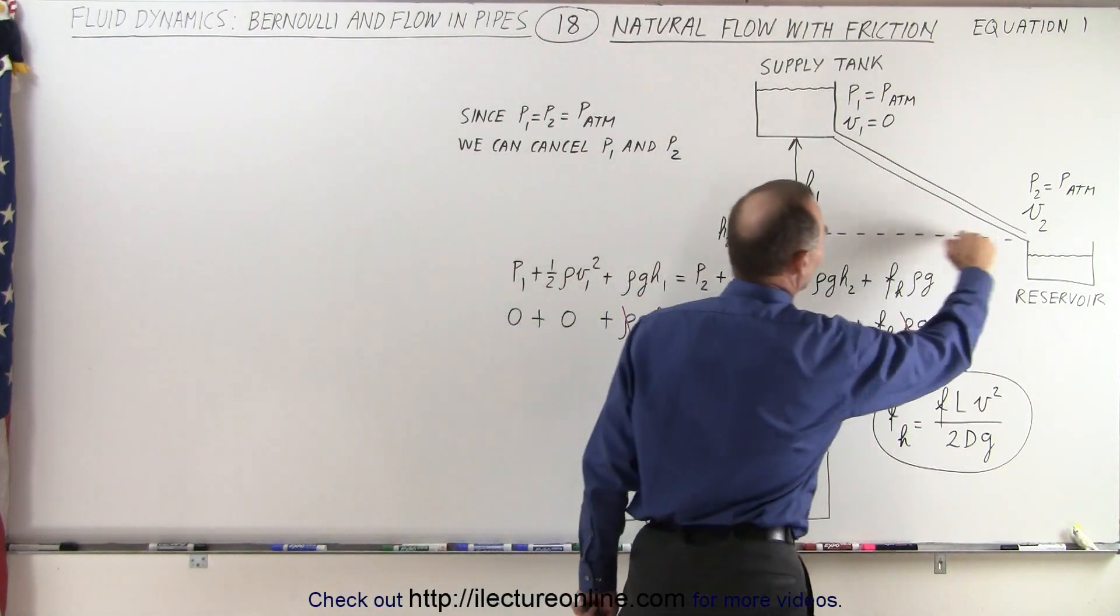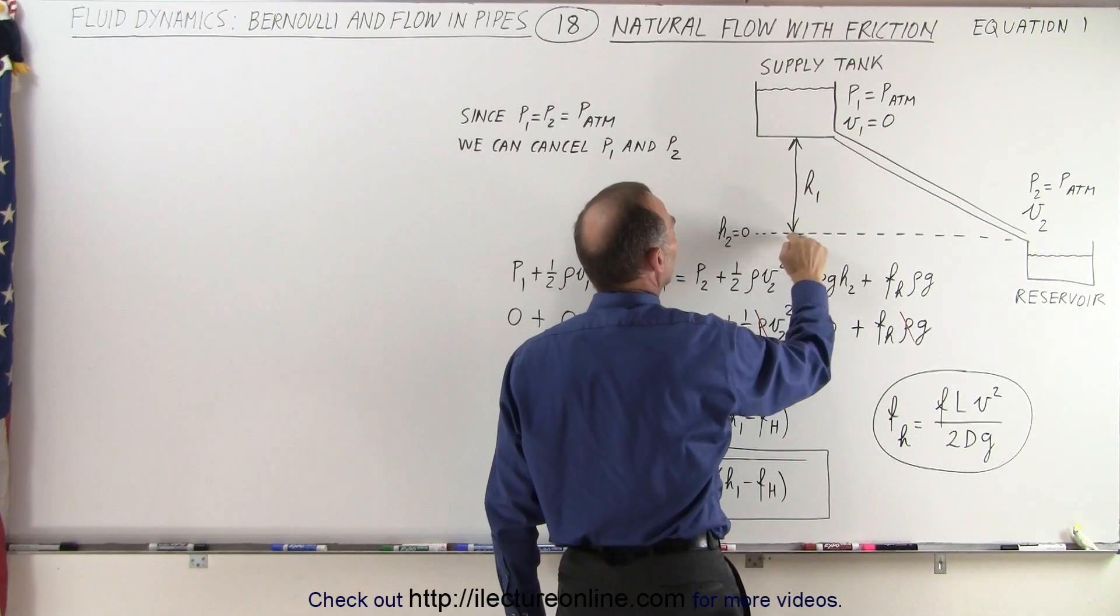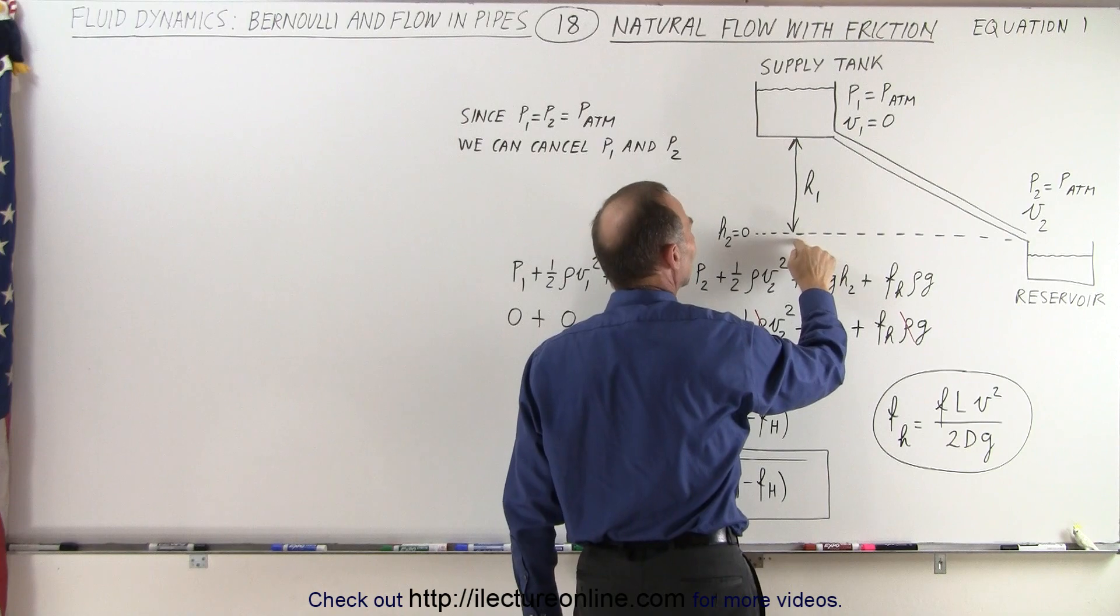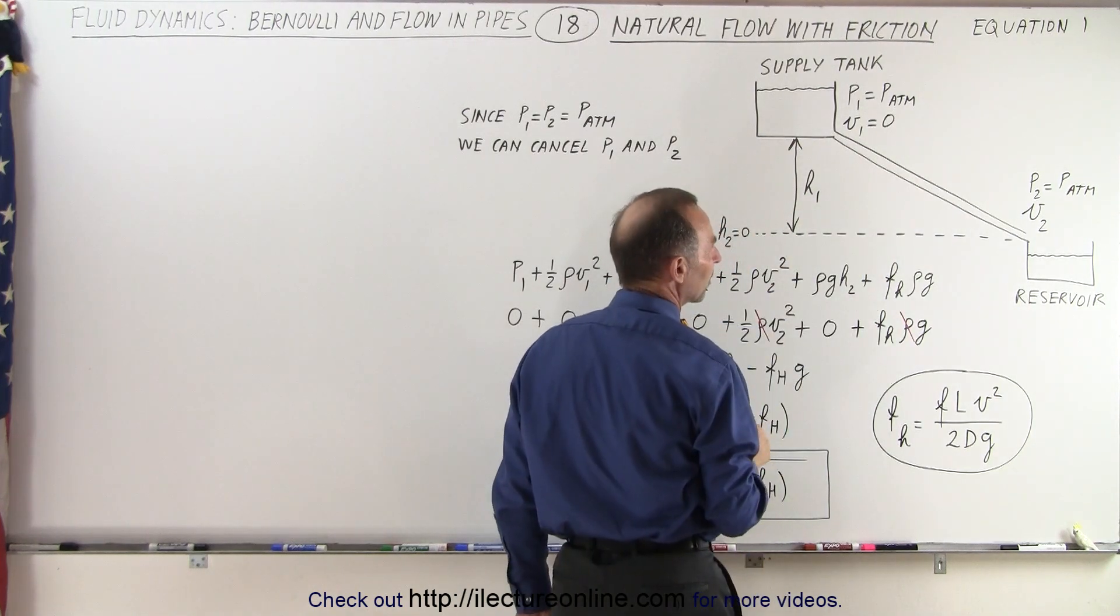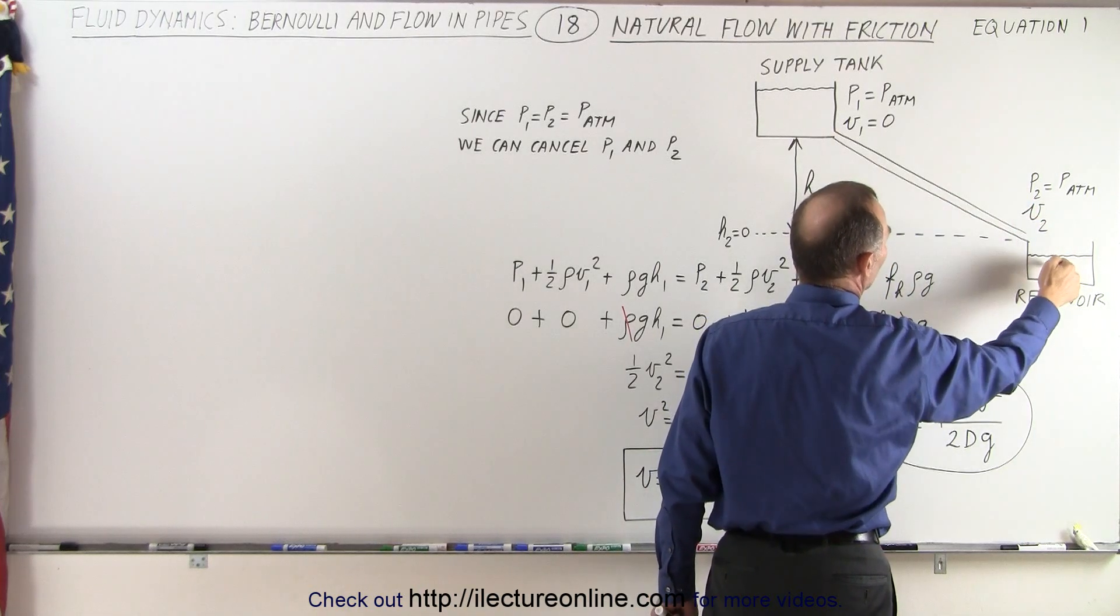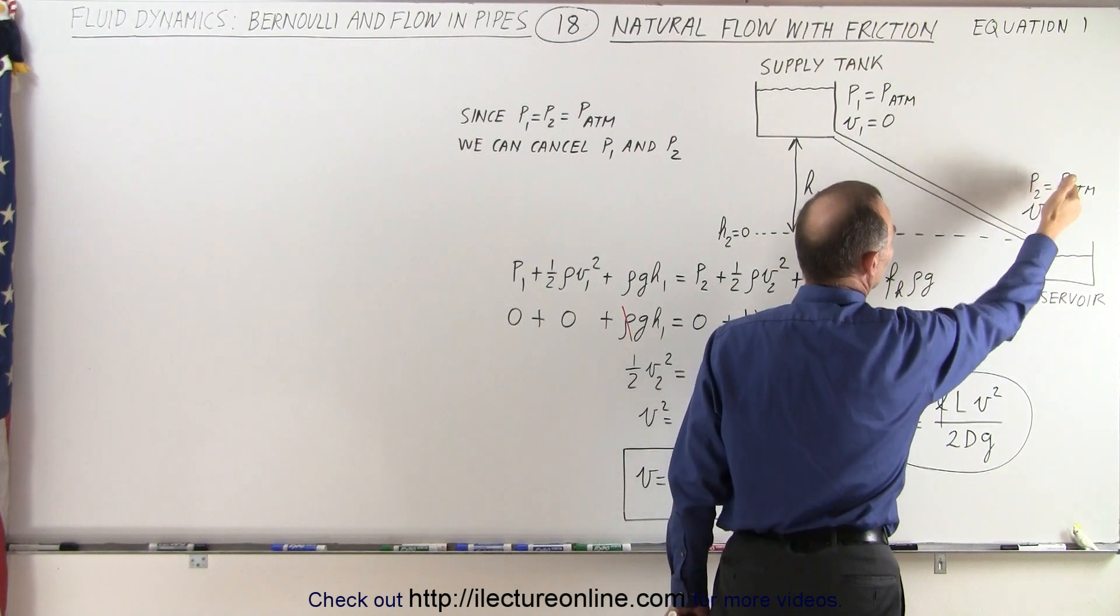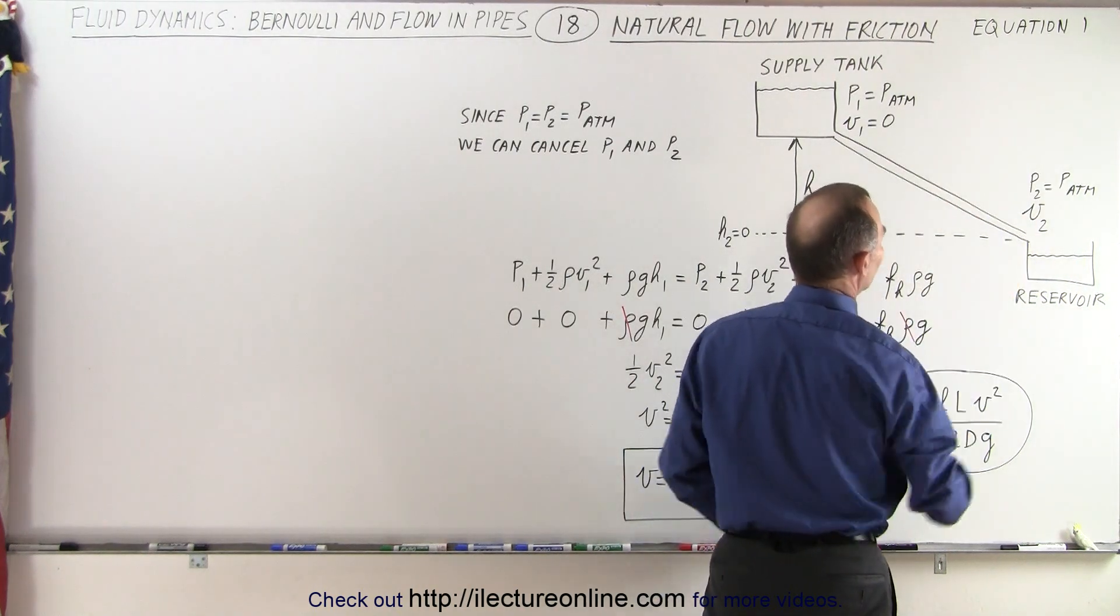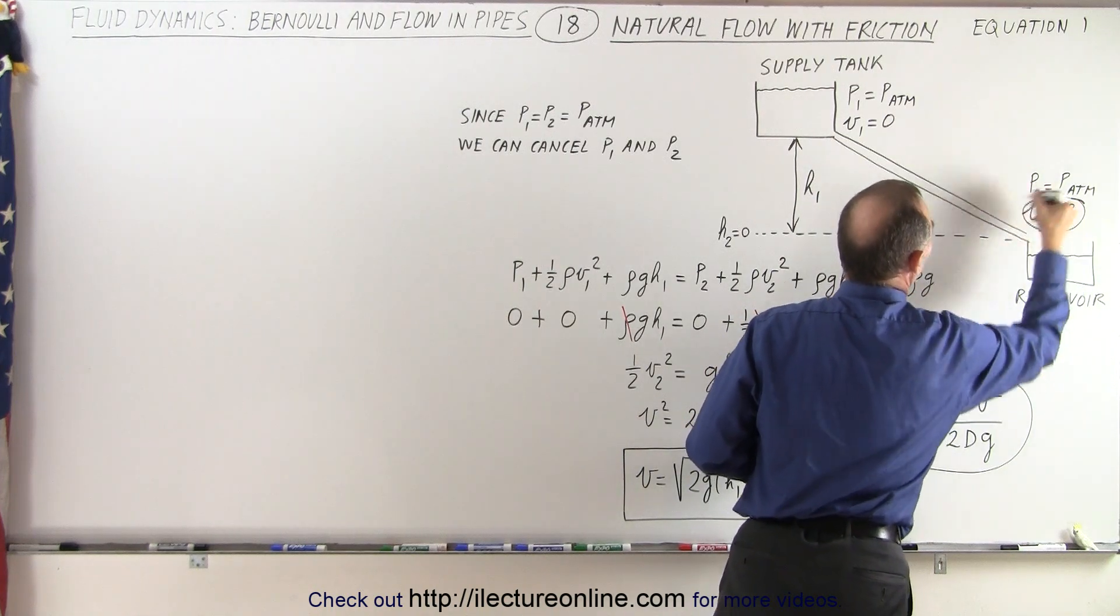Let's assume that the height reference is at the bottom of the pipe here, so that h2 is zero and h1 is simply the height from the end of the pipe to where the pipe starts. On the reservoir side, we can also say that the reservoir is open to the atmosphere, so p2 is equal to atmospheric pressure, and v2 is what we're trying to figure out. That's the unknown that we're looking for.